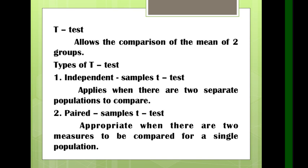For the t-test, this allows the comparison of the mean of two groups. When you have two groups to compare, we use t-test. There are two types: independent sample t-test and paired sample t-test. The independent sample t-test applies when there are two separate populations to compare. For example, getting the post-test result of the experimental group and comparing it to the post-test result of the control group — two variables but from separate populations. So we use independent sample t-test to determine if there is a significant difference.